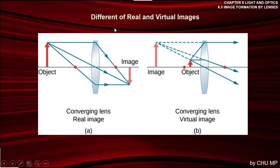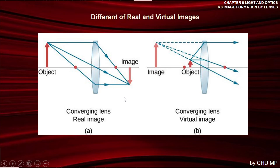So what is the difference between real and virtual? Real: the image forms on the right side of the lens (opposite side from the object). Virtual: the image forms on the left side — the same side as the object. In other words, if the object is on the left and the image is on the right — that's real. If the object and image are both on the same side — that's virtual. When the image is on the opposite side from the object, we call it real.